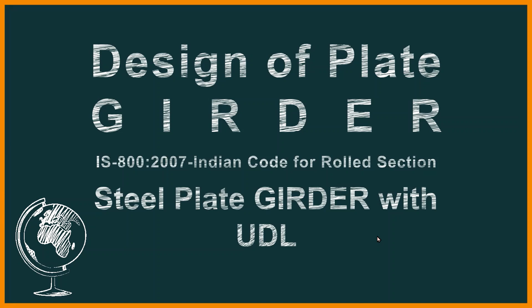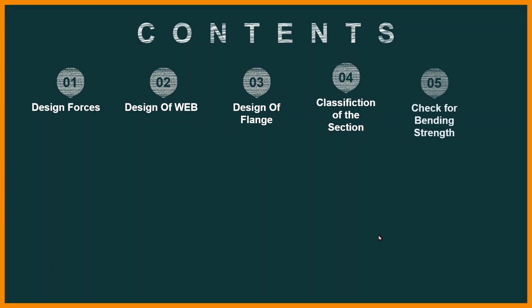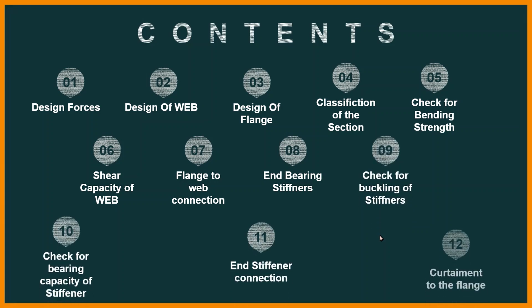Namaste dear friends. Today's topic is to design a welded plate girder as per the specifications mentioned in IS 800:2007, the Indian code for rolled steel sections. We are interested to design a plate girder subjected to uniformly distributed load. The contents will be: design forces calculation, design of web, design of flange, classification of section, check for bending strength, shear capacity of web, flange-to-web connection, end bearing stiffener, check for buckling of stiffeners, and check for bearing of stiffeners.